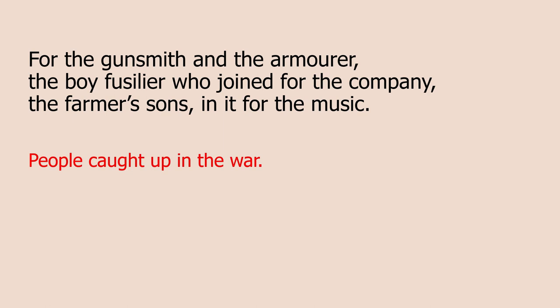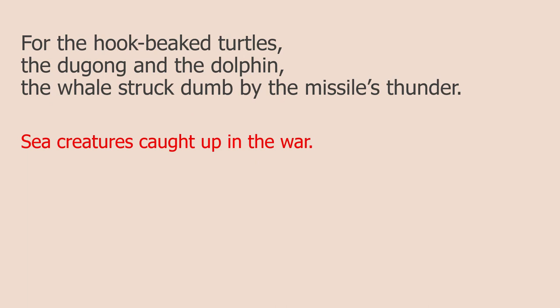Stanza four looks at the people caught up in war — we get a list of four: a gunsmith, an armourer, a fusilier, and farmer's sons. Stanza five looks at sea creatures affected by the war: turtles, dugongs (a dugong is like a manatee, a sea cow that eats seagrass), dolphins, and whales — all affected by missiles and the consequences of war.